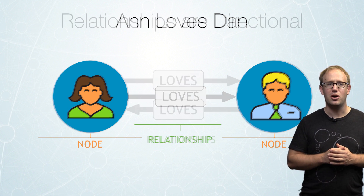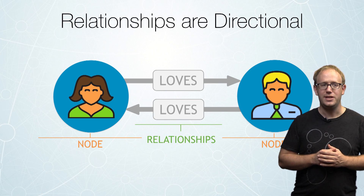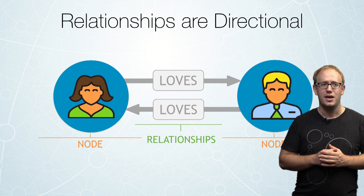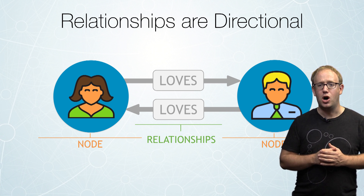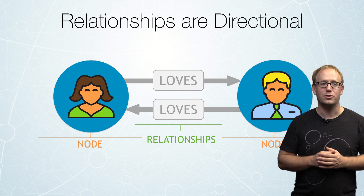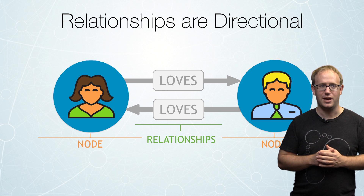Now, relationships are directional. So when Ann loves Dan, if Ann is lucky enough, Dan loves Ann back. And because this isn't always true, we would likely represent this as two separate relationships: one for Ann loving Dan and one for Dan loving Ann.